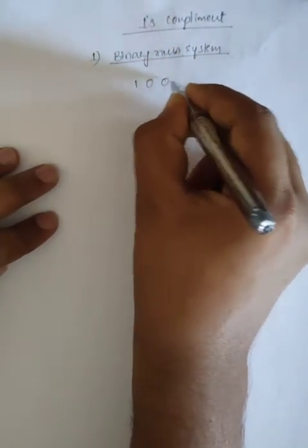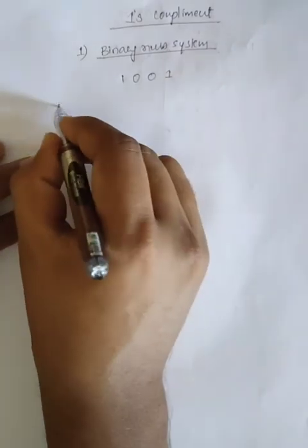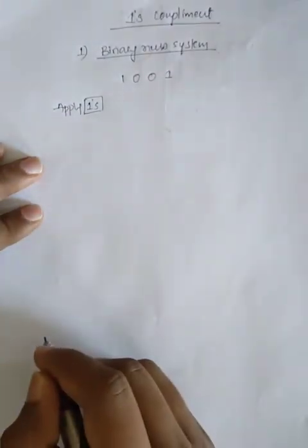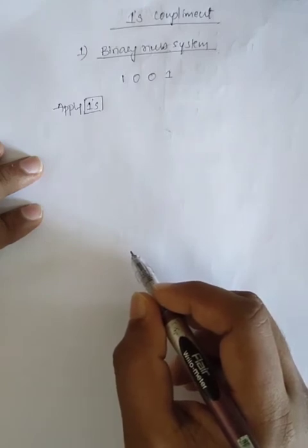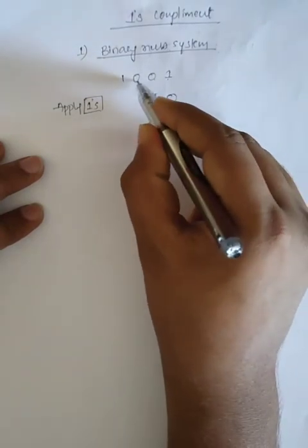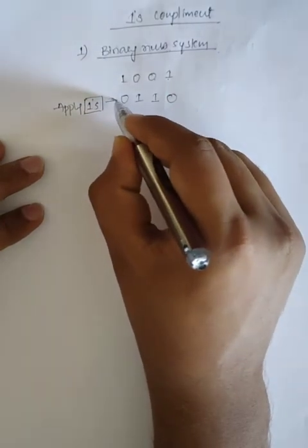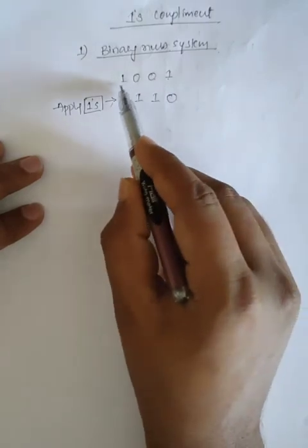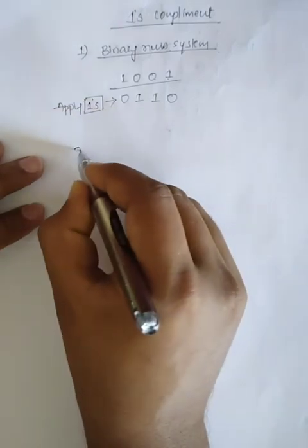Take the binary number 1 0 0 1. Applying the ones complement rule — ones complement means reversing the binary digit numbers. The reverse of one is zero, the reverse of zero is one. So this zero becomes one, this one becomes zero. This is the answer of the ones complement. Ones complement means reversing the binary number one time.